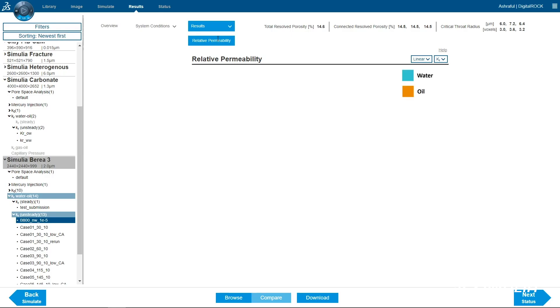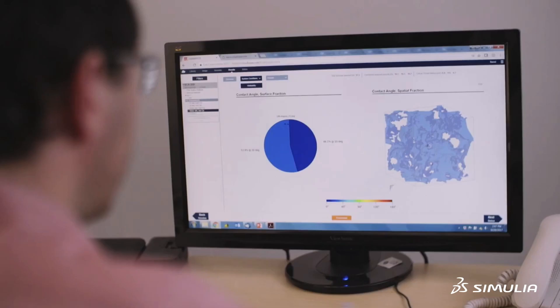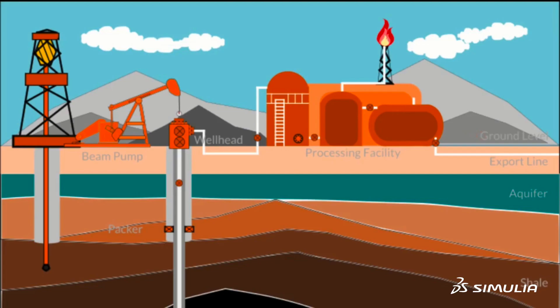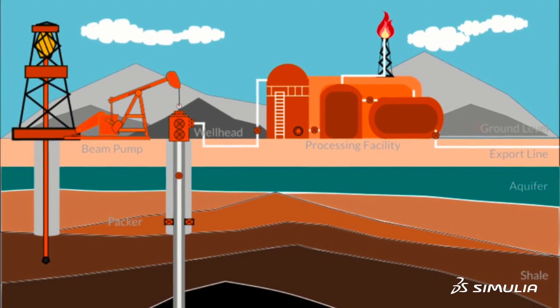One of the most important results is the relative permeability. It determines how easily fluids in a mixture, such as oil and water, will flow through the pore space of a rock. This is a crucial factor to evaluating potential oil production and it's critical input to any reservoir model.